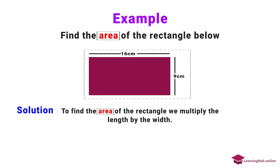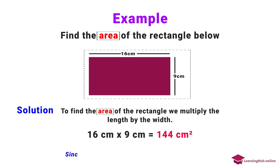To find the area of the rectangle, we multiply the length by the width. 16 centimeters times 9 centimeters equals 144 centimeters squared. Since we are measuring an area, the unit is squared.